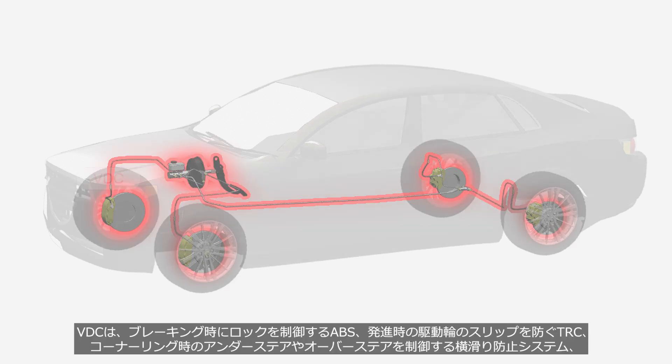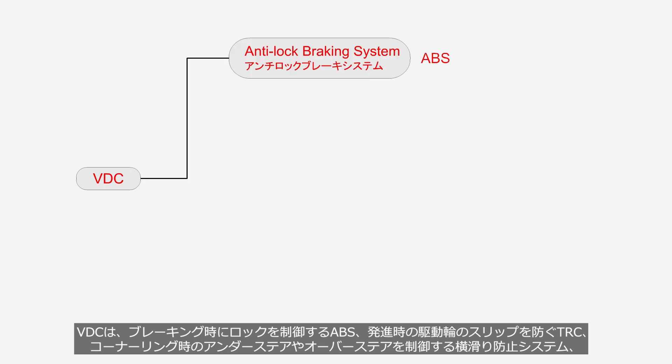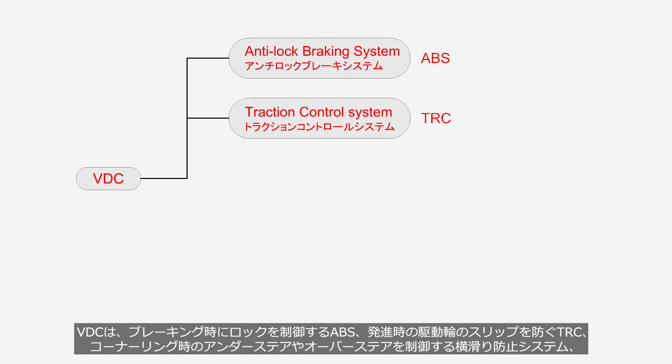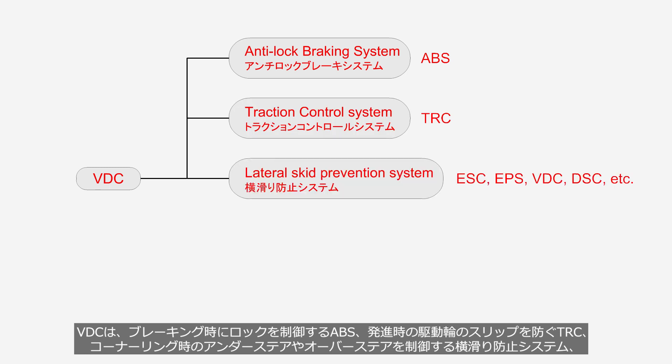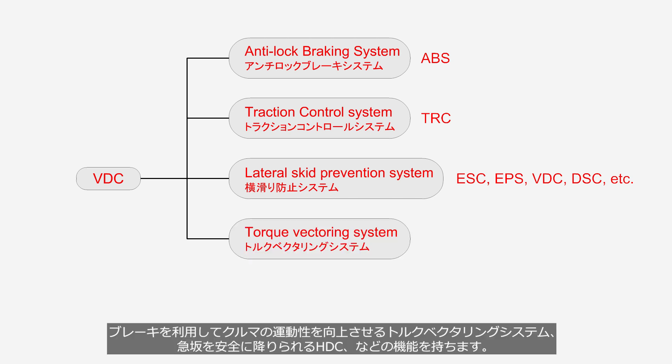The VDC includes functions such as ABS (Anti-Lock Braking System) to control wheel lock during braking; TRC (Traction Control System) to prevent wheel slip during acceleration; a lateral skid prevention system to manage understeer and oversteer during cornering; a torque vectoring system that enhances vehicle dynamics using the brakes; and HDC (Hill Descent Control) for safely descending steep slopes.